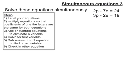Second example. First, label my equations. Now, I need to make sure that the coefficients of at least one of the variables are the same. So, this time, I'm going to multiply the top one by 2, and the bottom one by 7. Let's do that.